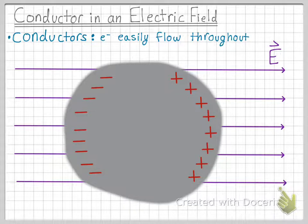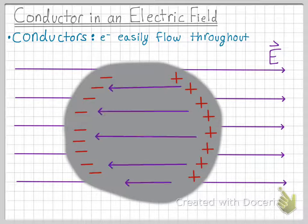So we also know that charges themselves can create electric fields. Electric field lines come out of positive charges and into negative charges. So the separation of charges within the conductor then creates this second electric field, and this second electric field is pointing in the exact opposite direction of the first electric field.